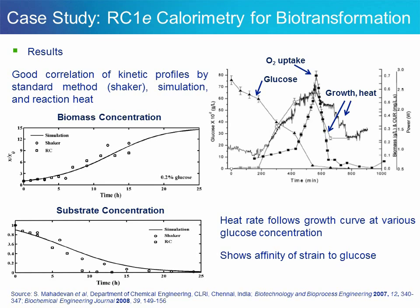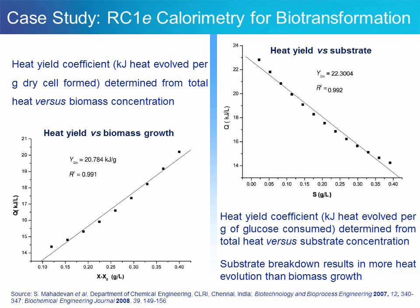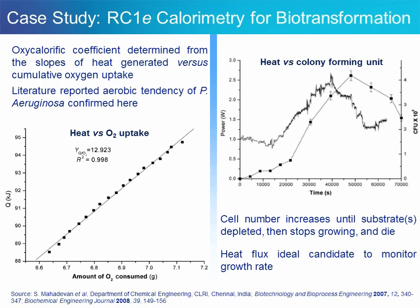As expected, glucose concentration drops quickly as a result of cell growth and metabolism. The researchers conducted similar experiments at various starting glucose concentrations and obtained consistent data every time. In the next stage, heat was plotted against biomass concentration; the slope gives heat yield — the heat evolved per gram of dry cell. Applying the same concept to glucose, they obtained the heat evolved per gram of glucose consumed. Comparing the two values allows the conclusion that glucose consumption releases more specific heat than biomass growth — in other words, substrate breakdown releases more energy than biomass growth itself.